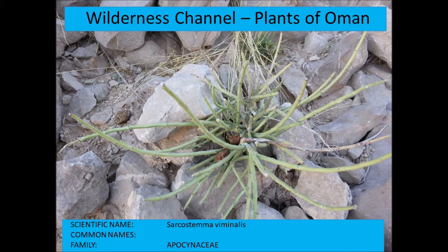Sarcostemma viminale is a succulent from the Apocynaceae with typical rope-like stems and no leaves. The stems act as phyllodes — they photosynthesize through a modified leaf stalk and main stem, which behaves as a photosynthetic organ.